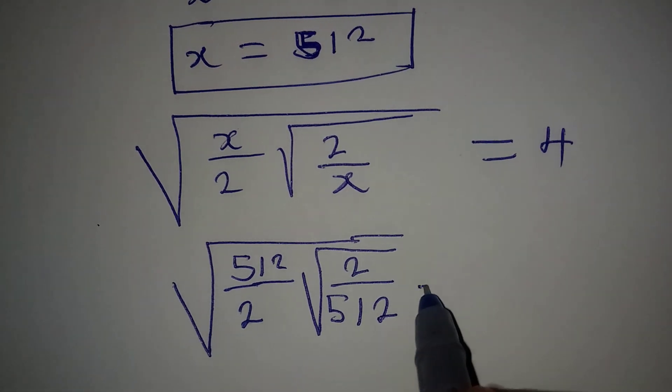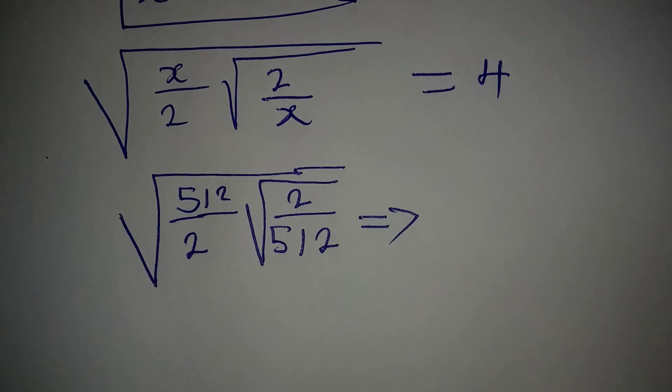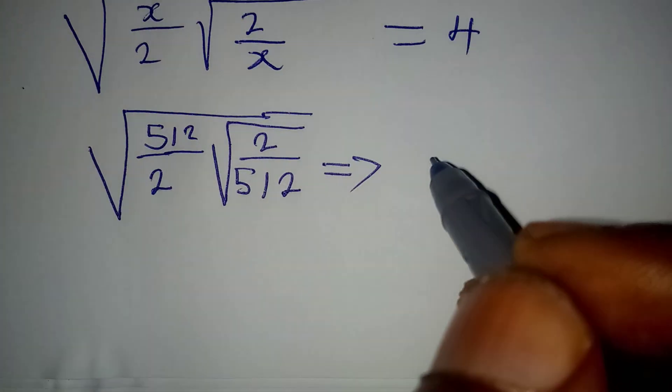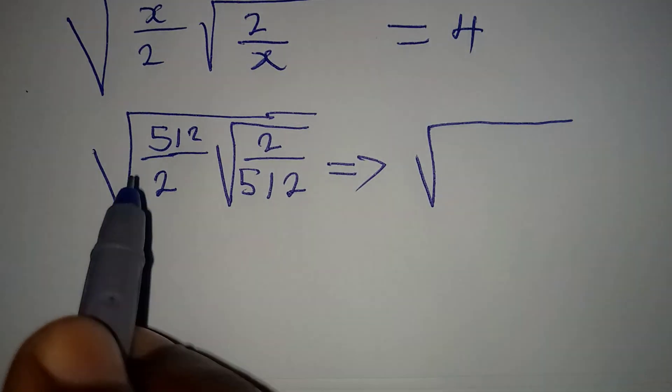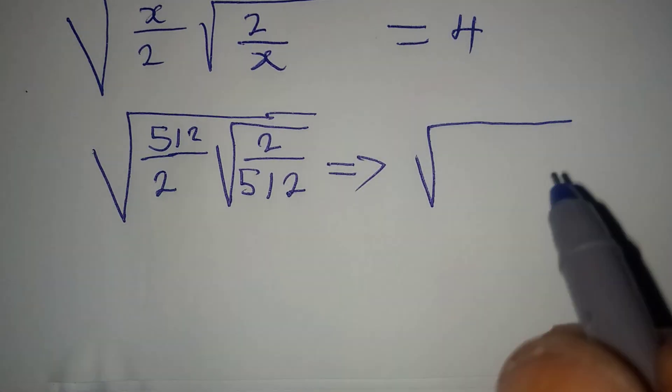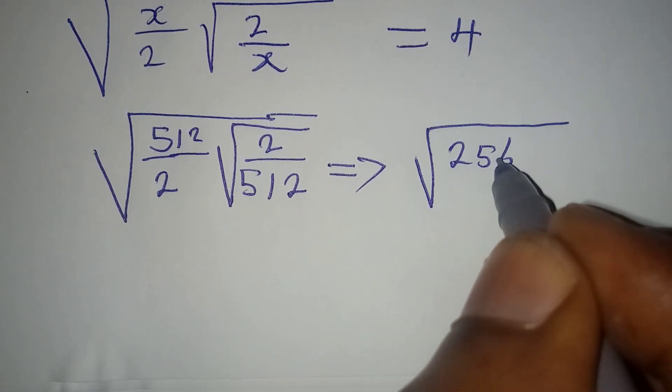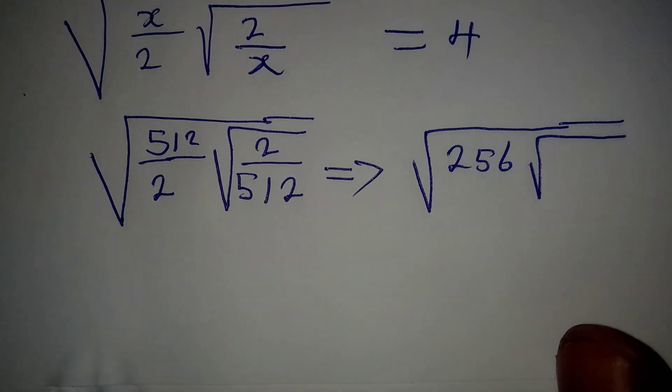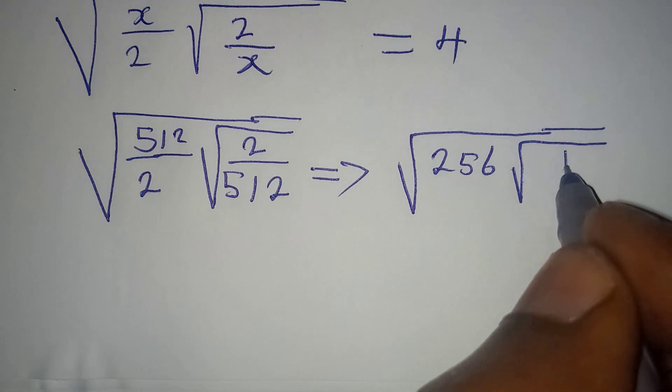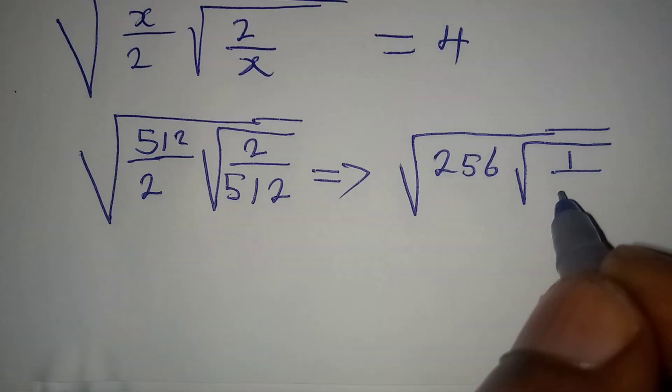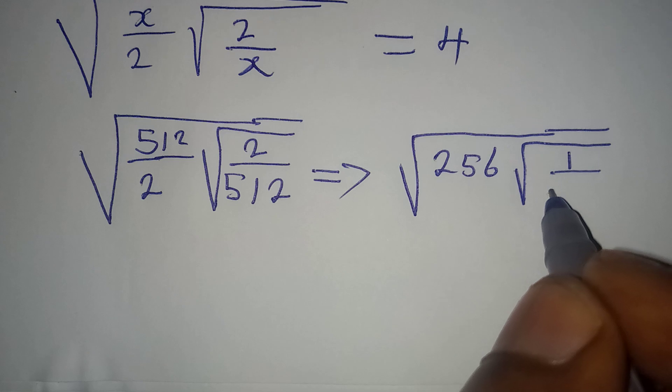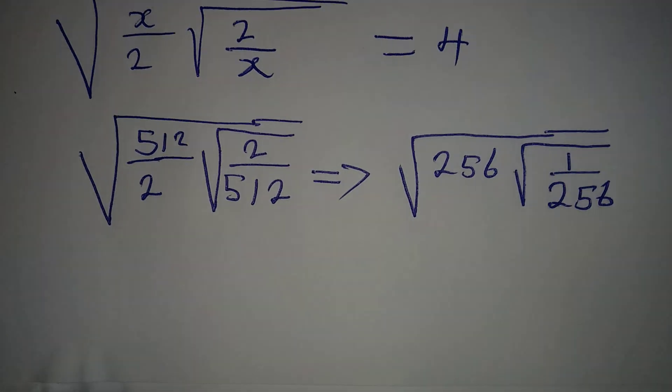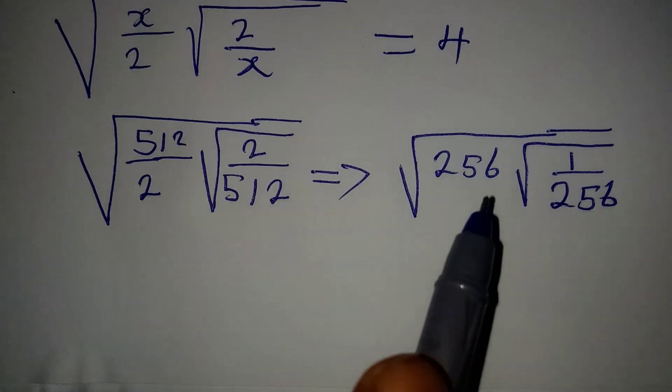Now the question here is, will this give us 4 on the right hand side? Let's keep working. Okay, so we're going to have square root of 512 divided by 2 will give us 256. Then we have square root of 2 into 2 is 1, then 2 into 512 will still give us 256.